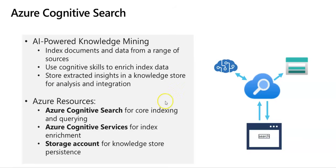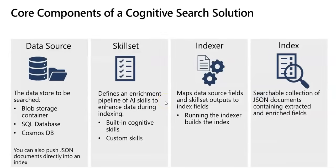Moving forward, let's talk about the core components of a cognitive search solution. Our Cognitive Search solution consists of multiple components, each playing an important part in the process of extracting, enriching, indexing, and searching of the data. There are four core components of the Cognitive Search solution: data source, skill set, indexer, and index.